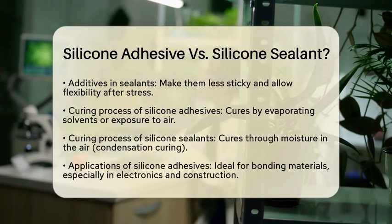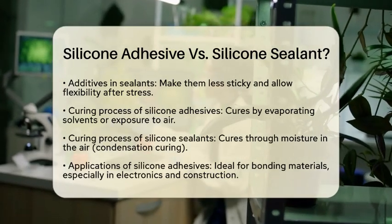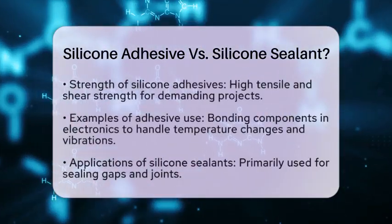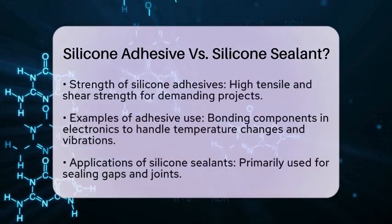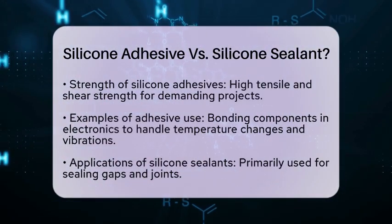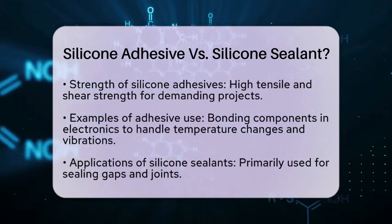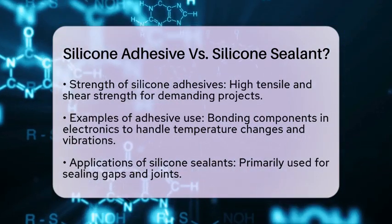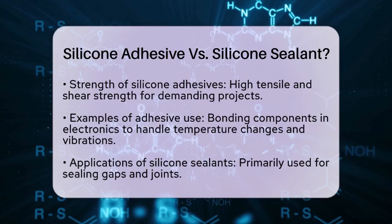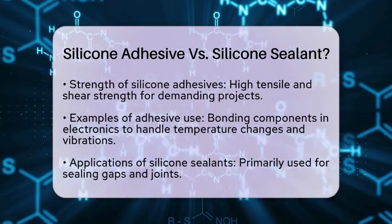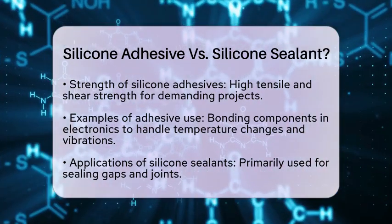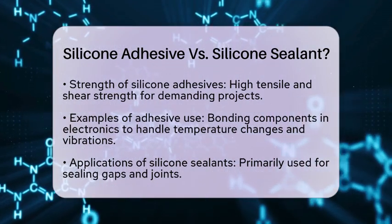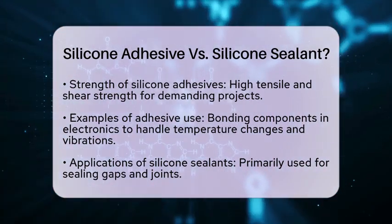Now let's look at their applications. Silicone adhesives are great for bonding materials together. They provide high tensile and shear strength, making them ideal for electronics and construction projects where a strong bond is necessary. For instance, in electronics, silicone adhesives are often used to bond components, ensuring they can handle temperature changes and vibrations.